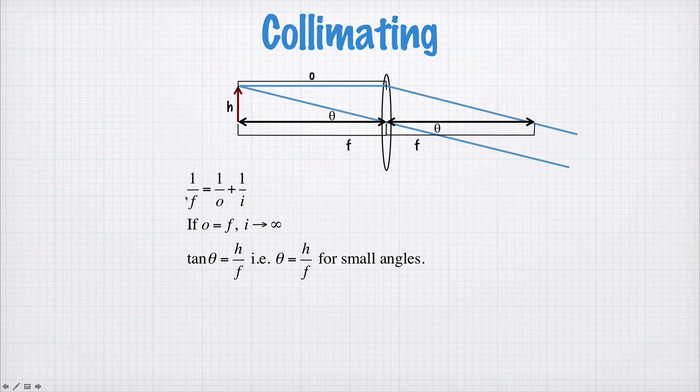So in the equation it looks like this: the object distance is equal to f, and so if we have a 1 over f here and a 1 over f here, it means that 1 over i must be equal to 0, so the image distance here tends towards infinity. And the angle θ we get from the same construction as last time, with a triangle with f and, in this case, h. So tan θ is equal to h over f, or for small angles θ is approximately equal to h over f.